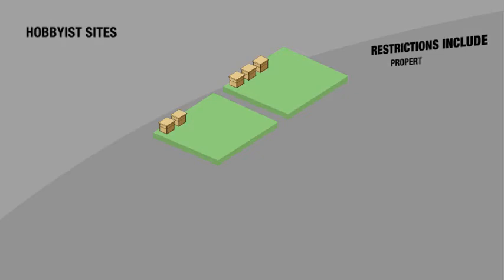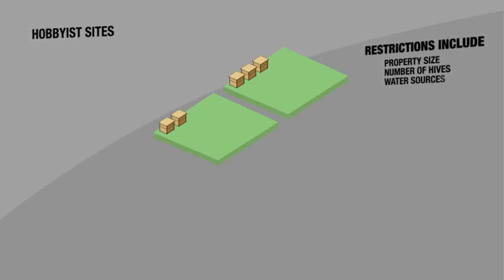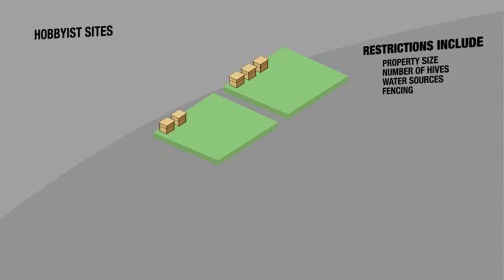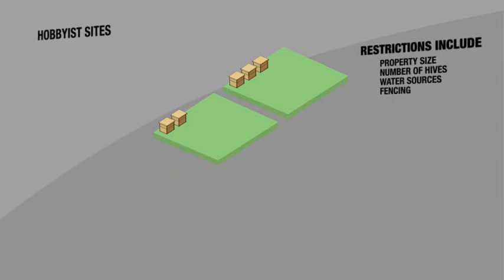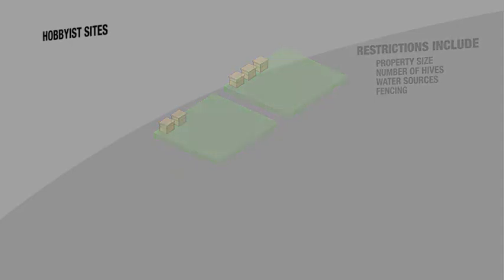The kinds of restrictions that you're likely to find are on property size, the number of hives you can have. Some municipalities require you to provide a water source so that your bees won't be out in the neighbor's dog dishes or the neighbor's swimming pool. Some of them require you to have a fence. Most of the registrations are not city registrations. They're registrations with the Department of Ag, so we do get involved in that to some extent.